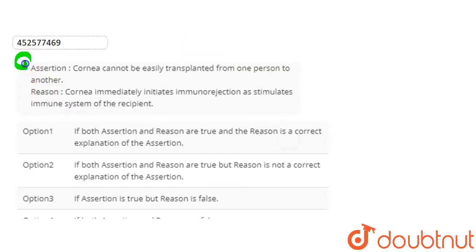Hello students, let's start the question. The question here is based on assertion and reason. The assertion statement we have given here is that the cornea cannot be easily transplanted from one person to another.